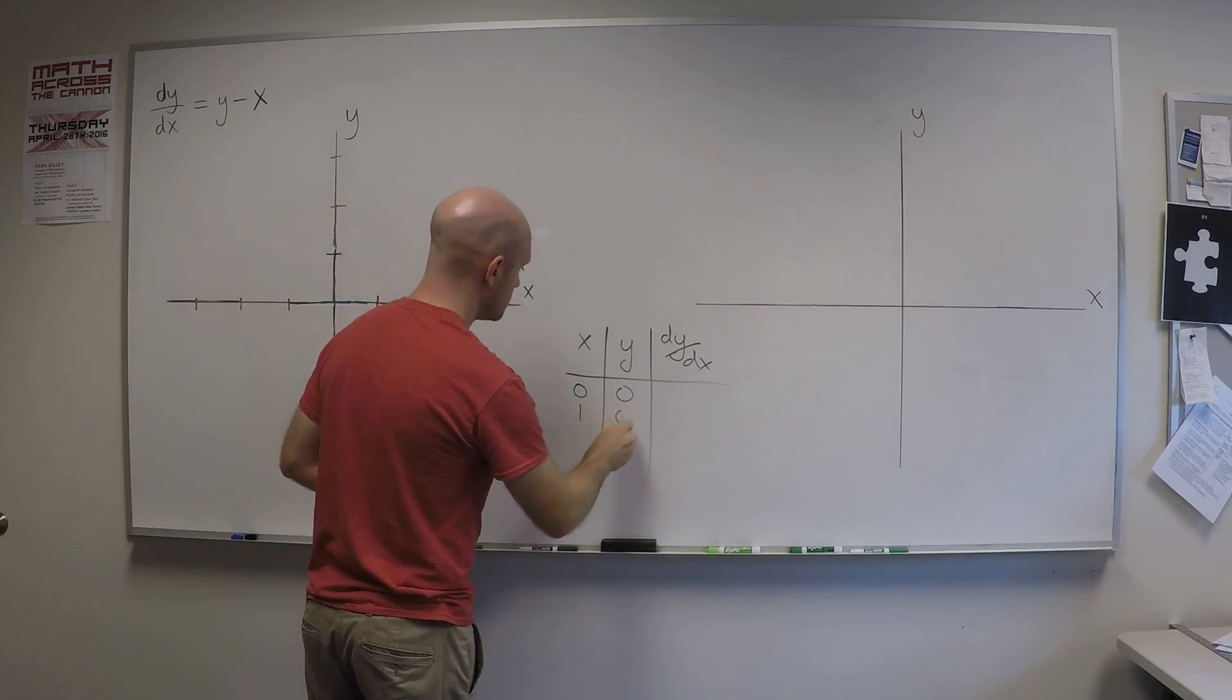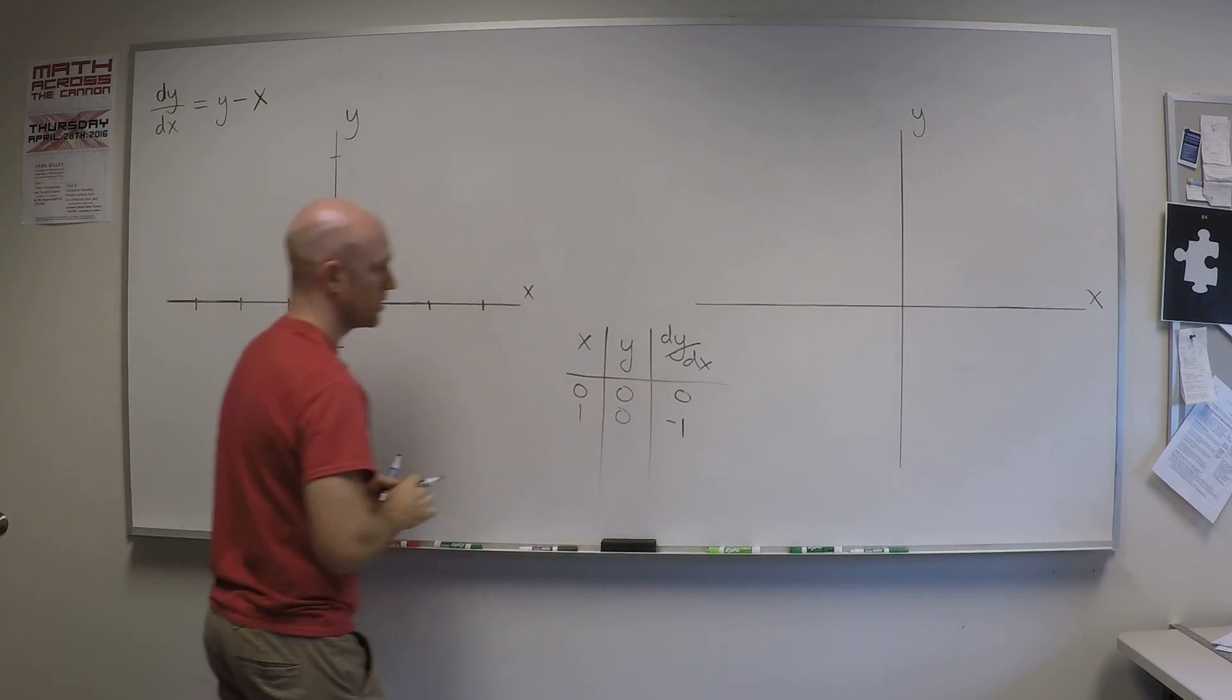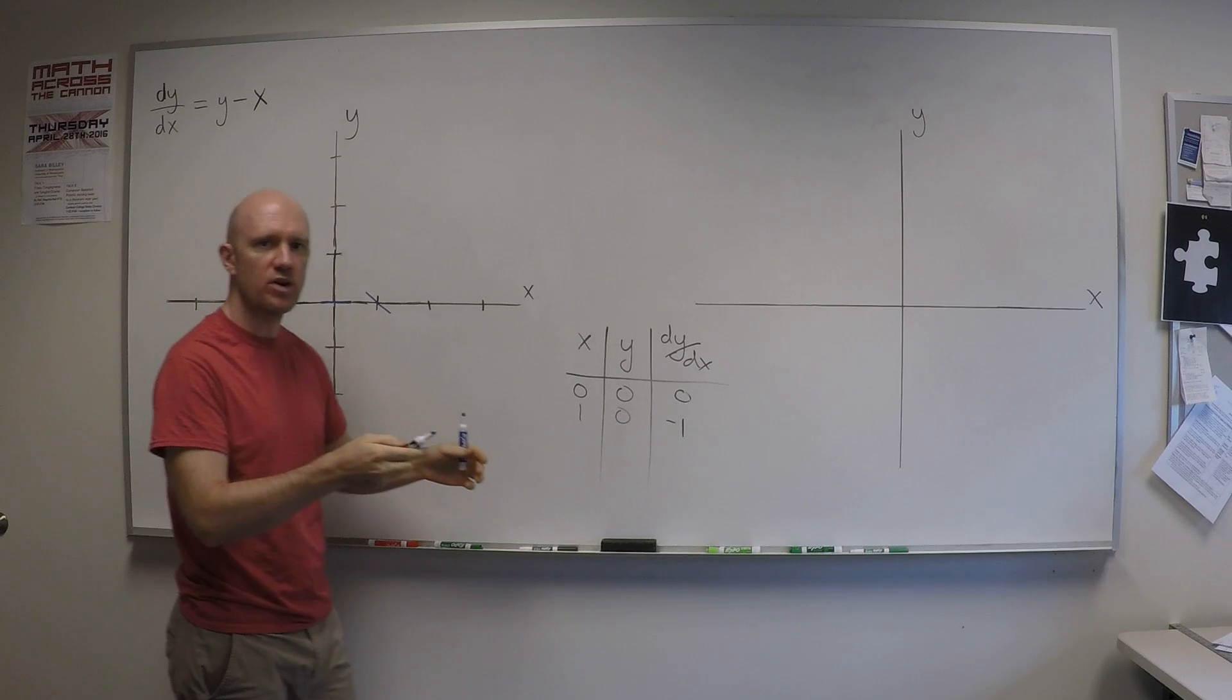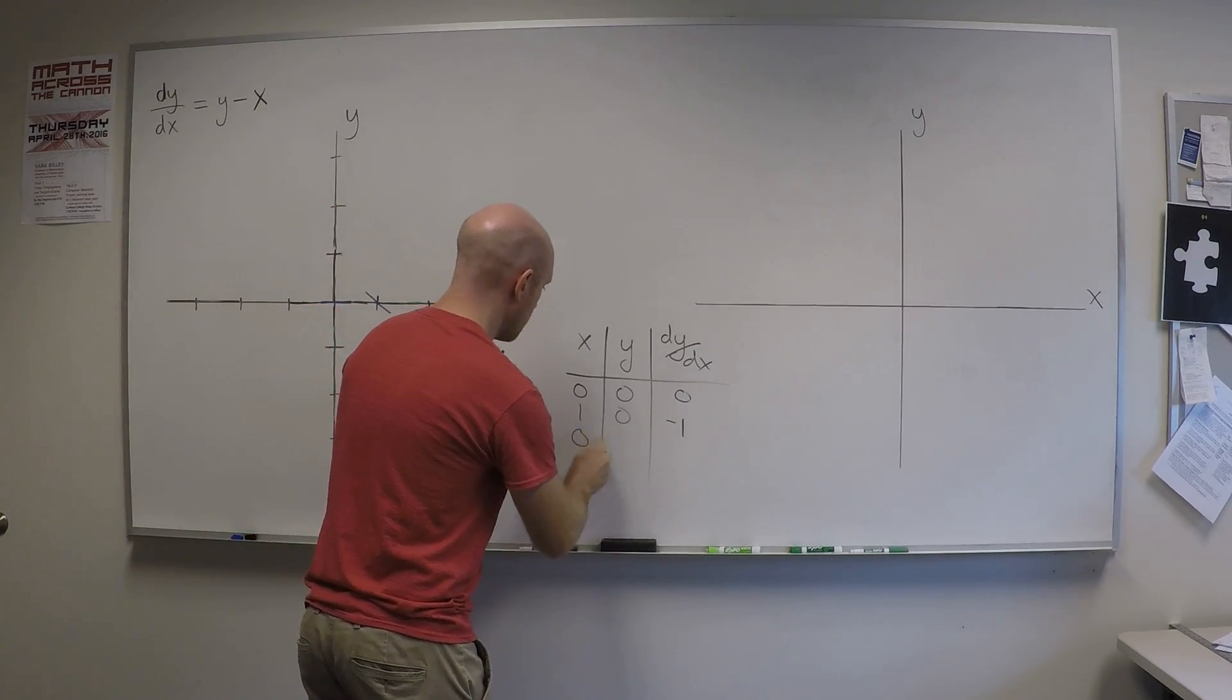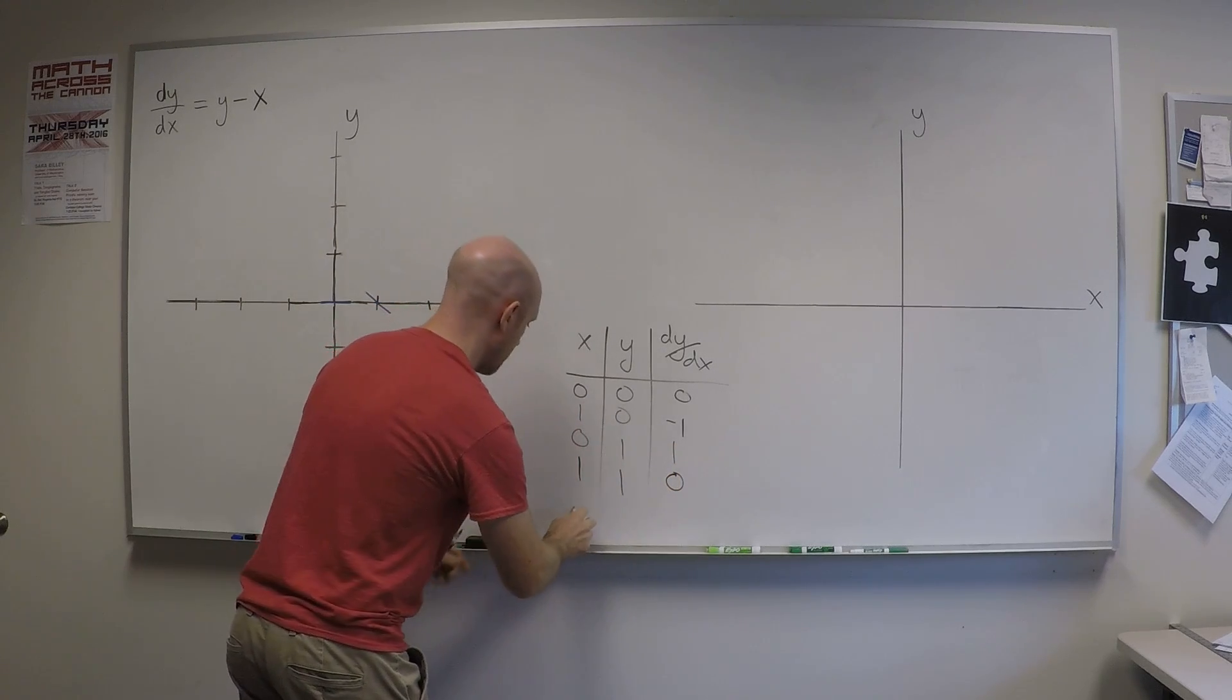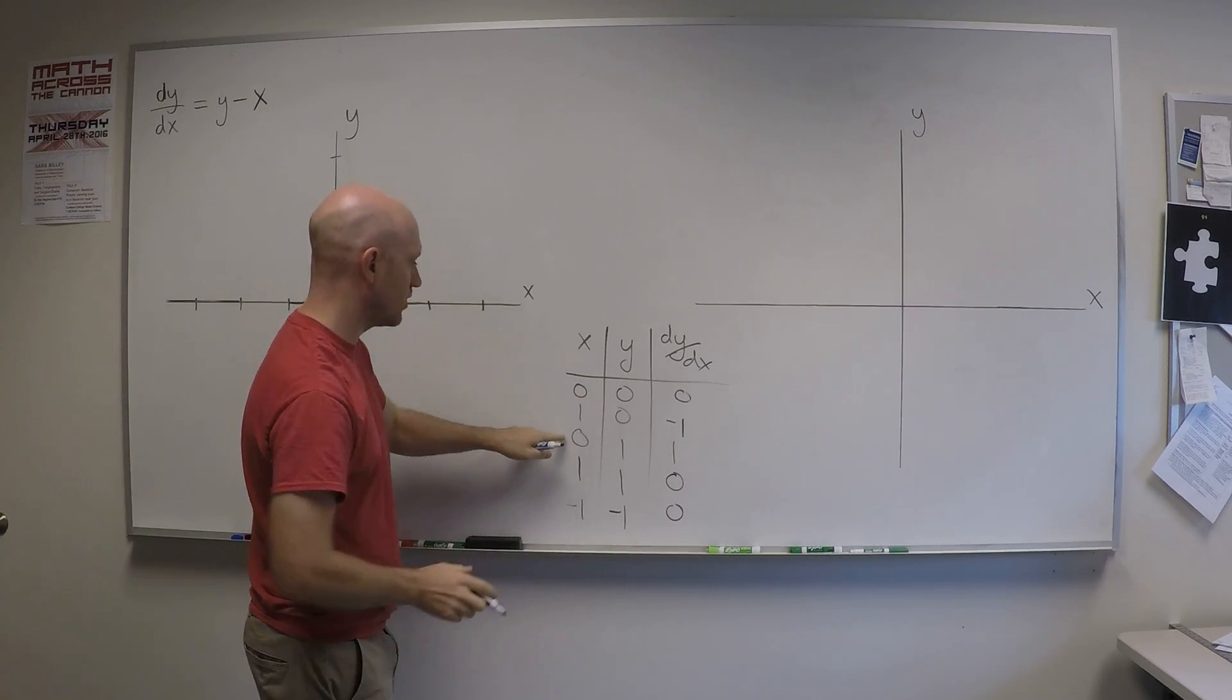Let's do some more. How about 1, 0? Well, if x is 1 and y is 0, this gives me minus 1. I'll write in that 0 there. It gives me minus 1. So if I go over here to 1, 0, I get a slope of minus 1. Let's compute a few other numbers and then we'll put them in our plot here. How about 0, 1? That's 1. 1, 1 is 0. How about minus 1, minus 1? That's also 0. We could do some more.